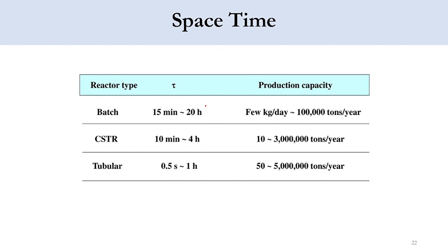For batch system, the value of tau is higher: 15 minutes to 20 hours, and the production capacity is obviously low because you have more residence time, more holding time in the reactor - few kg per day to some thousand tons per year. For CSTR, 10 minutes to 4 hours, and you can see the production capacity has increased. For tubular reactor it is 0.5 second to 1 hour, so you can see the production capacity has increased significantly.